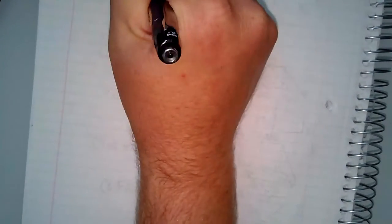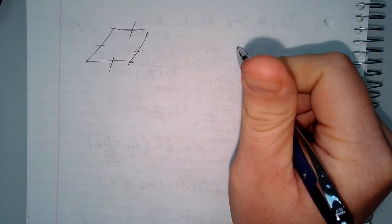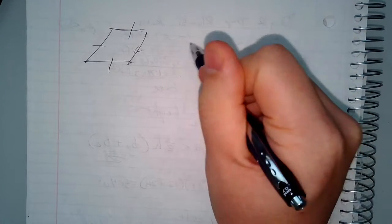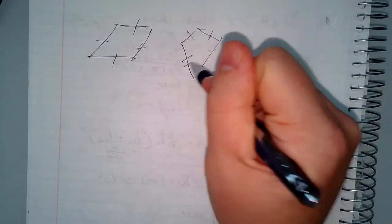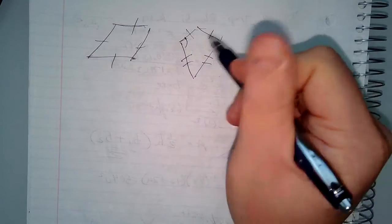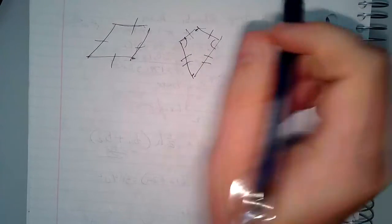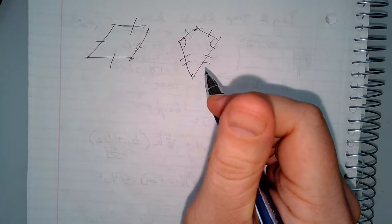Moving on to rhombi. A rhombus is a parallelogram with all four sides congruent. A kite is a quadrilateral with exactly two pairs of consecutive congruent sides — one pair, two pair — and those interior angles will always be the same. The area of a rhombus is one-half times diagonal one times diagonal two.